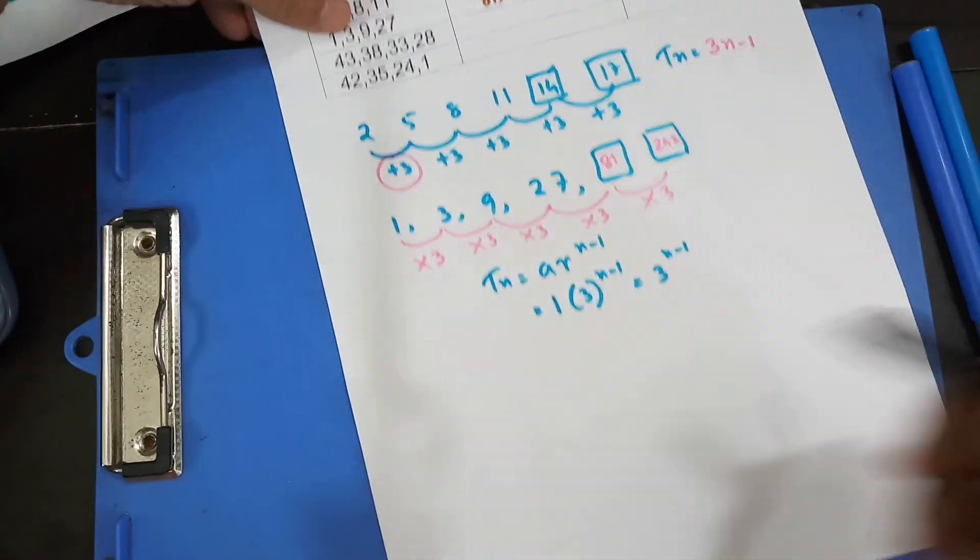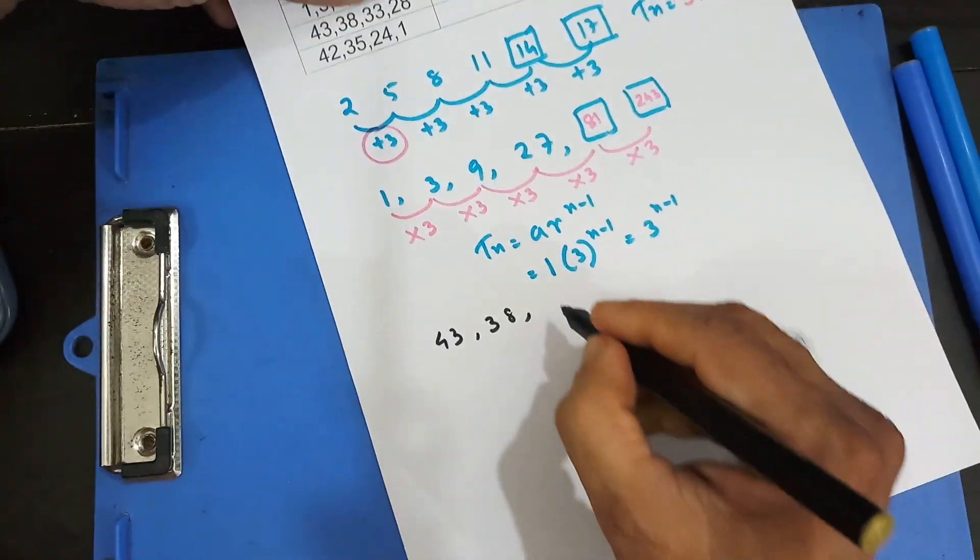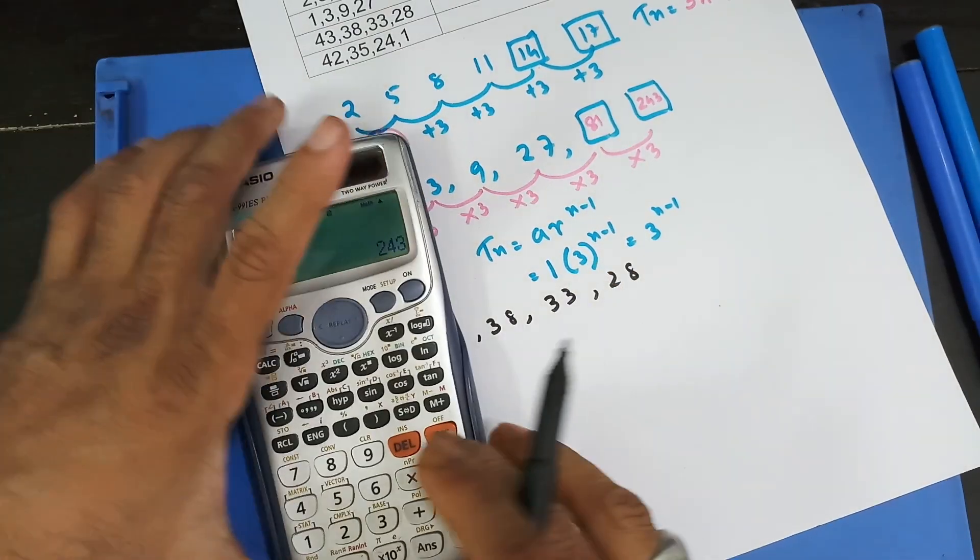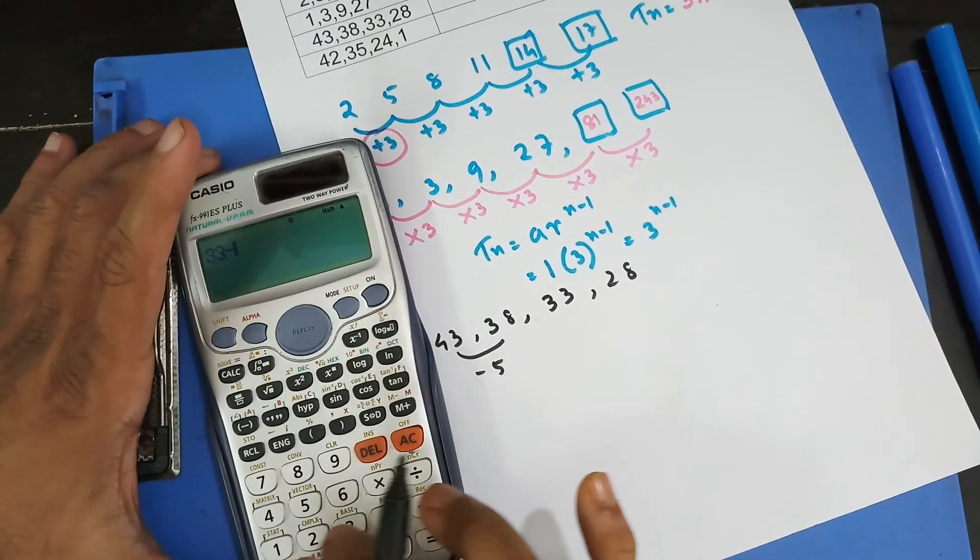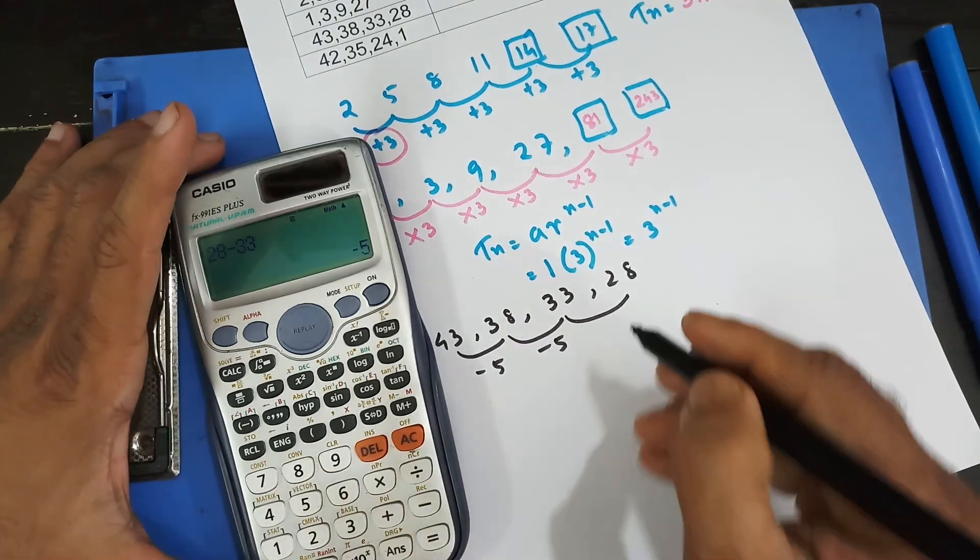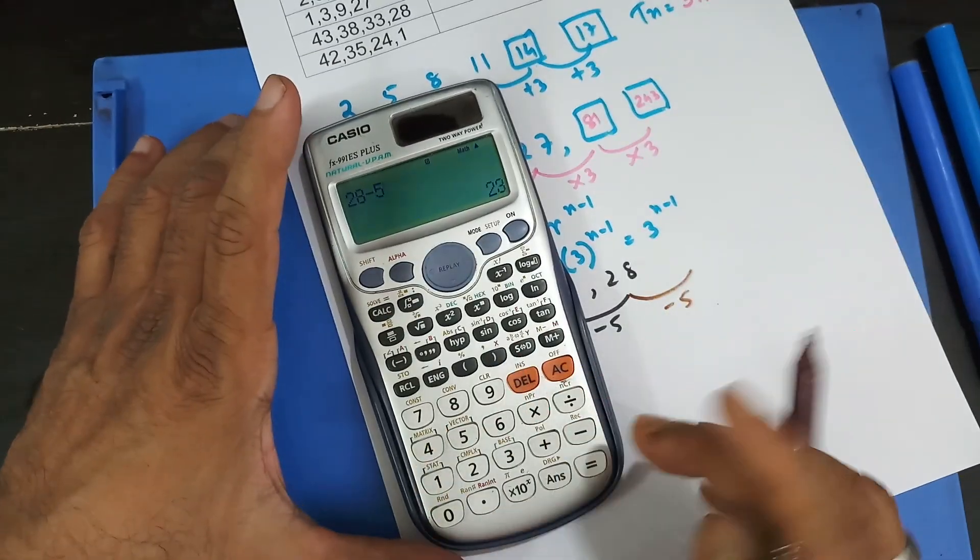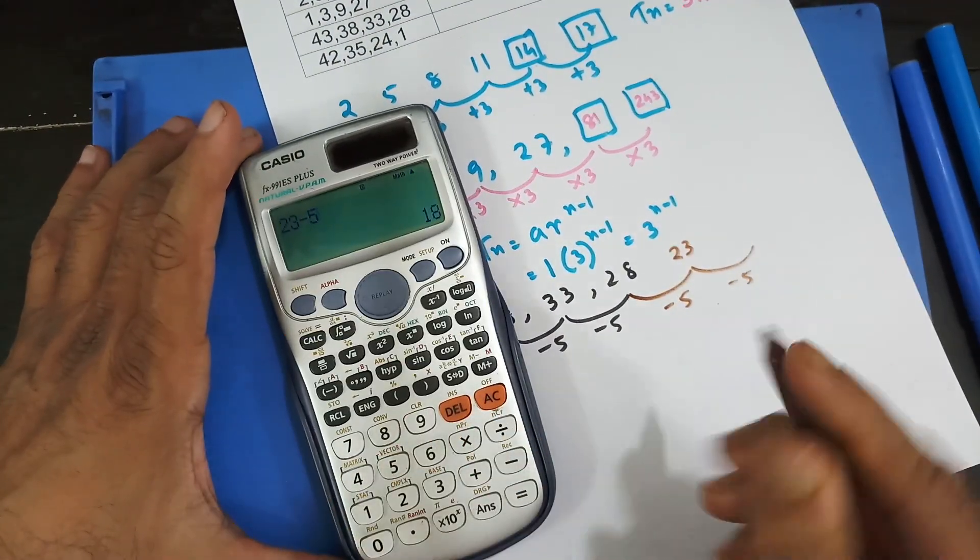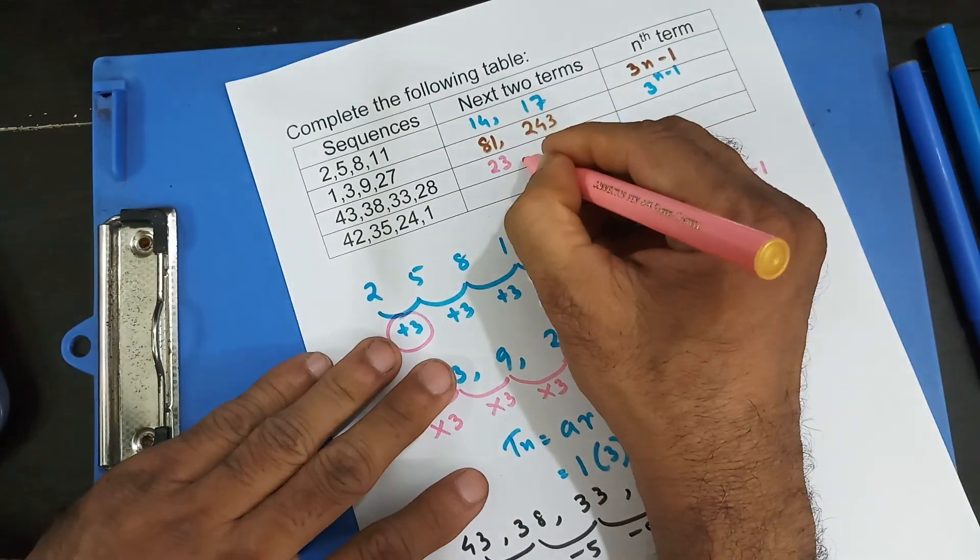Next one is 43, 38, 33, 28. Again, we're going to try this. 38 minus 43, that's going to give me minus 5. I'll try with the next one. 33 minus 38, that also minus 5. I'm hoping this is going to be minus 5 again. 28 minus 33, that's minus 5. Very good. Now, the next one is going to be minus 5. So 28 minus 5, that's going to give me 23. And then again, 23 minus 5, that's going to be 18. So I can write down next two terms are 23 and 18.